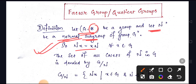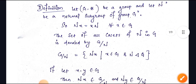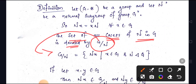Since N is a normal subgroup of G, for any element x in G, the condition Nx = xN must be satisfied. The set of all cosets of N in G is denoted by G/N — this is our quotient group notation.